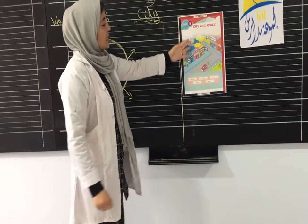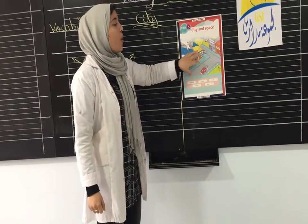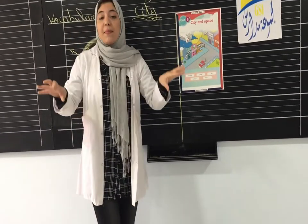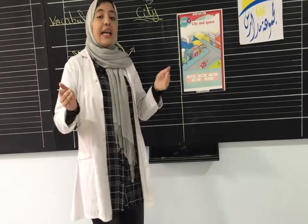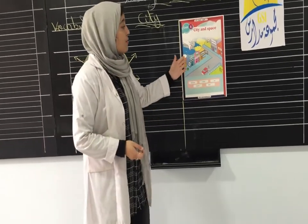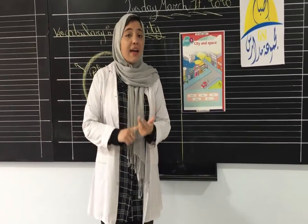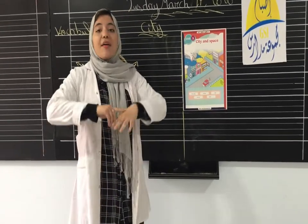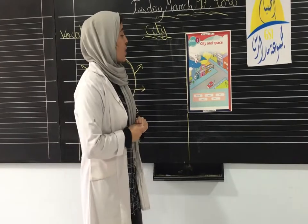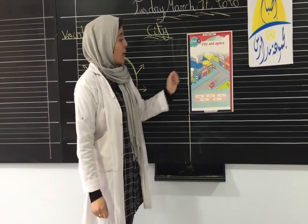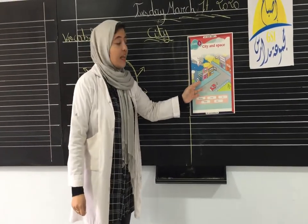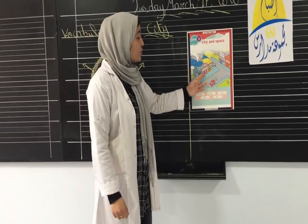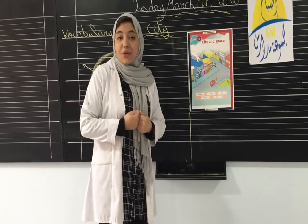As you can see here in the picture, we have so many places. In a city, we have banks, restaurants, and a bookshop. We have a bank. We also have a bookshop, where you can read books.